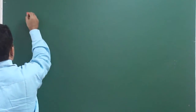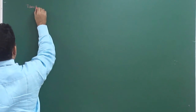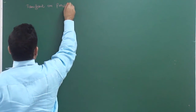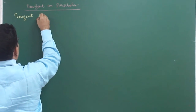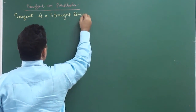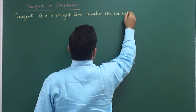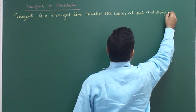Today we are going to discuss the tangent on parabola. Everybody knows what a tangent is. Tangent is a line that touches the curve at one and only one point.